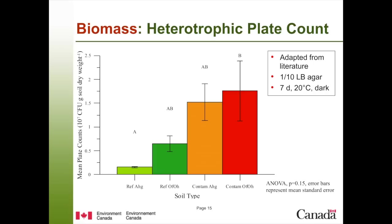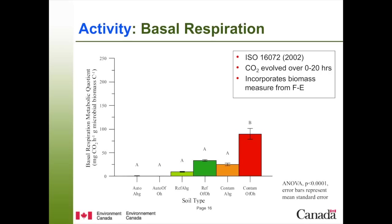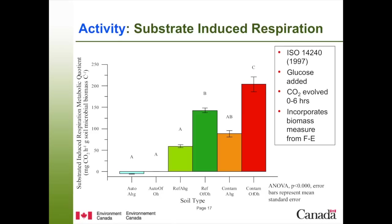For activity measurements, we used basal respiration — placing a gram of soil in a vial, incubating over 20 hours, and measuring CO2 evolved from a headspace sample. The contaminated OFOH had a significantly higher amount of CO2 evolved compared to the reference OFOH, and the contaminated AHG also had more CO2 than the reference AHG. Autoclave samples showed no CO2. For substrate-induced respiration, we added glucose and incubated for a shorter period. Again, contaminated OFOH and AHG both showed more CO2 than their respective reference horizons, and autoclave samples showed none.